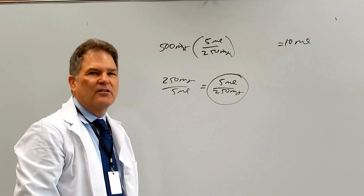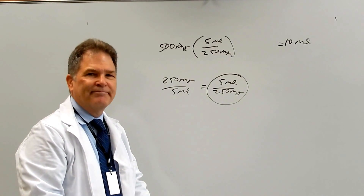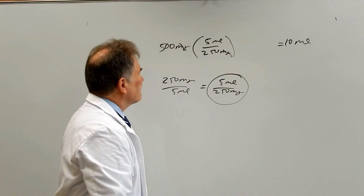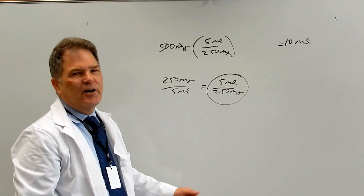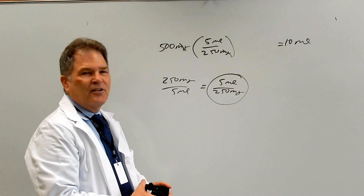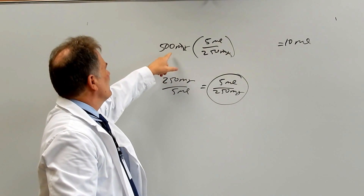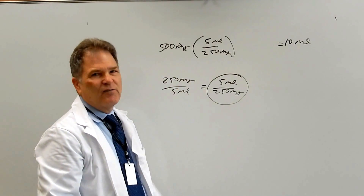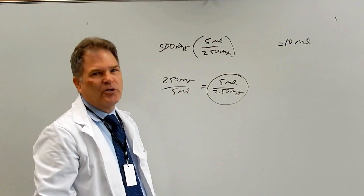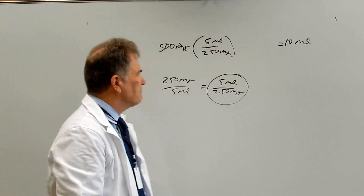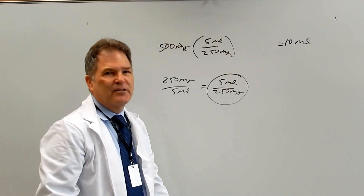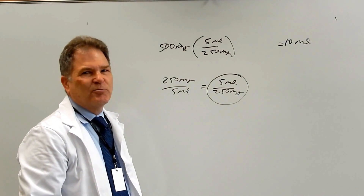This is a simple example, but if you learn how to set these things up with the easy ones, you can do the tougher ones later on. There are two ways of doing these calculations. This way is called dimensional analysis — you're basically multiplying the given by a form of one to change the dimensions or units into what you want to end up with. I prefer this method. There's another method called ratio proportion.